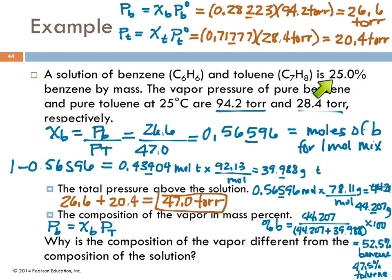This percentage of benzene in the vapor (52.5%) is not the same as in the solution (25%) because benzene has a much higher vapor pressure—94.2 torr vs. 28.4 torr for toluene. Benzene is more volatile, so the vapor above the solution is enriched in benzene.